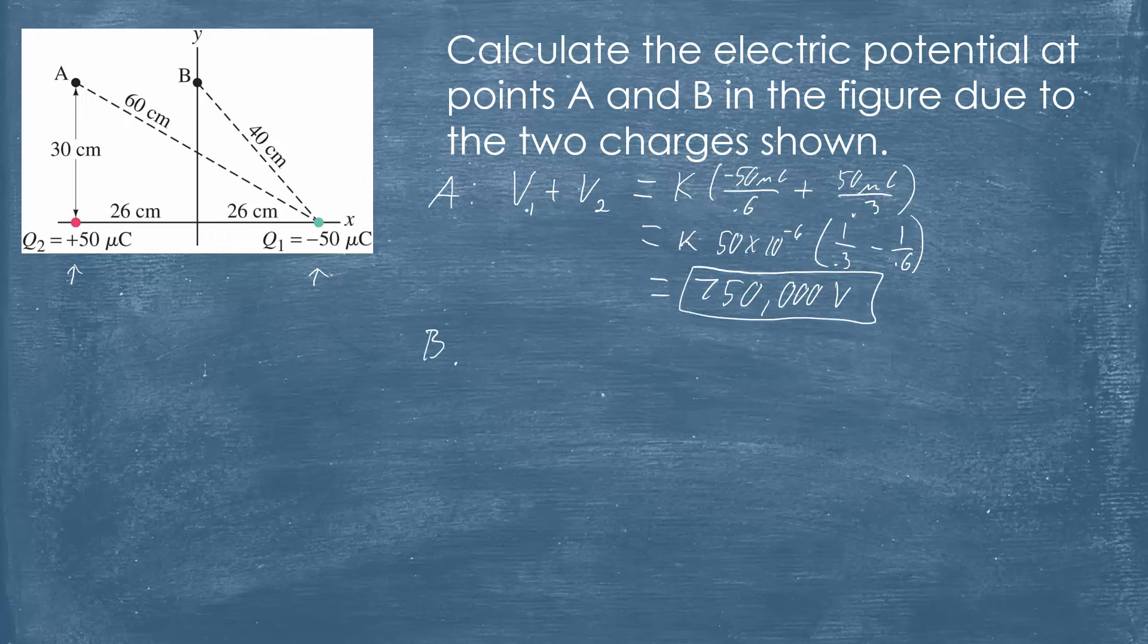For point B we do the same thing, we sum the two, and you might notice even though it's not labeled, the 26 centimeters are the same and it's the same vertical distance, so both of those charges are equidistant from point B. And since they are equal in magnitude but opposite charges, you guessed it, those will sum to zero, and any point that is equidistant from these two charges will have zero potential, which is anything along this line right here, this perpendicular bisector.